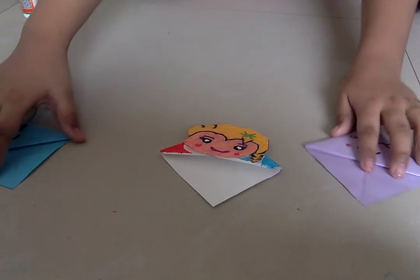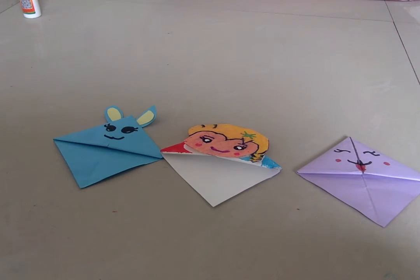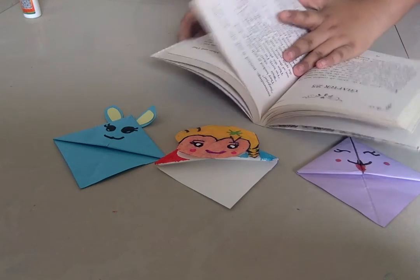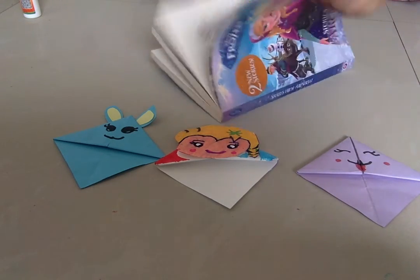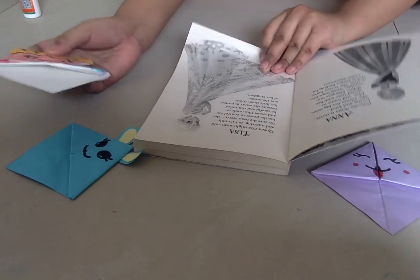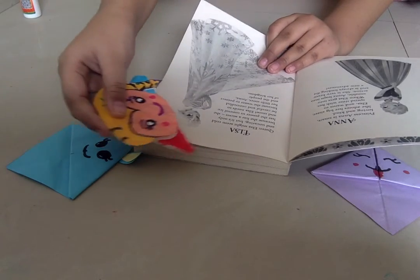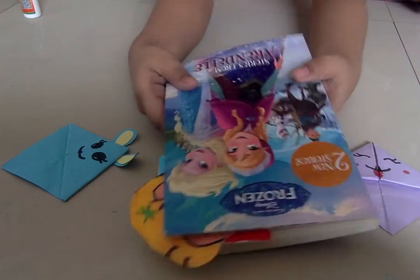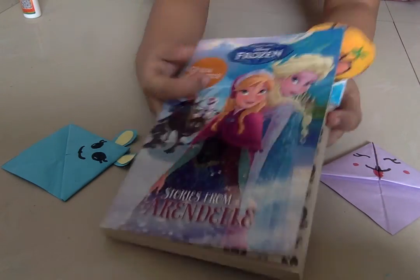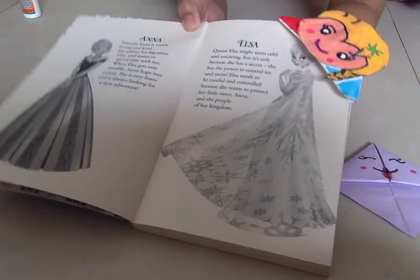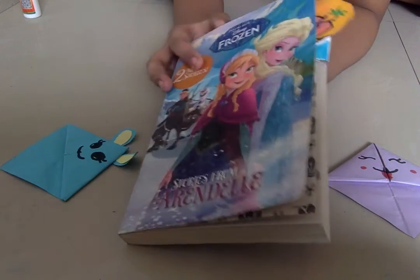So this is the three bookmarks I made. Now let's see if I put it in my favorite storybook about Elsa and Anna. So let us get on the page. Let us put it in. Whoa! And now close it and you'll get a nice bookmark over here. This is how it looks.